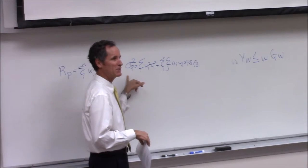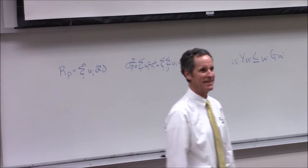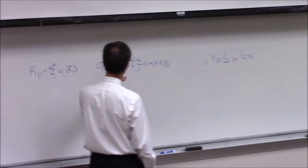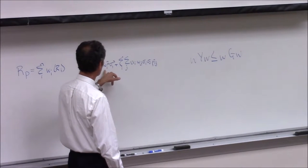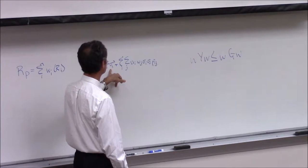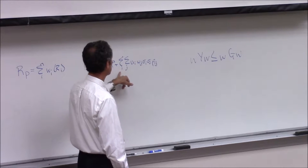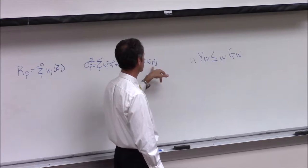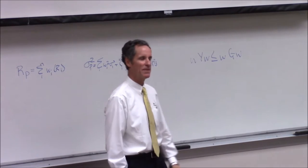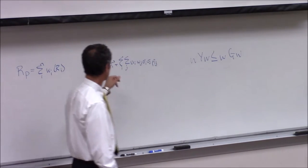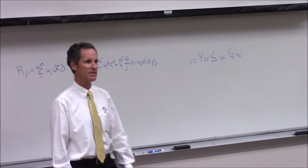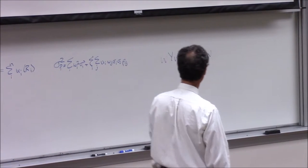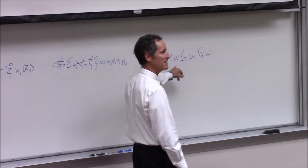How about this one here? What's this one? The variance of a portfolio is equal to the sum of the weight of asset one squared times the variance, plus the sum of I, J, weight one, weight two, standard deviation one, standard deviation two, times the correlation. What does that tell us? The variance is a measure of risk and volatility. But probably the most important formula of all finance is this one right here.